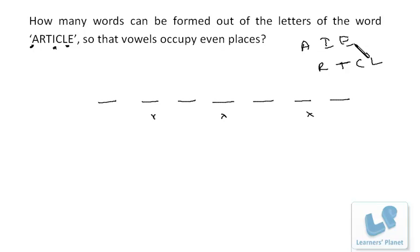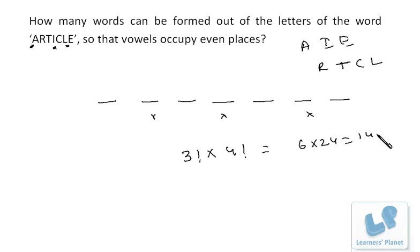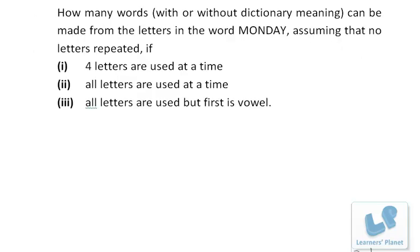The four consonants and three vowels: we arrange the vowels in the 2nd, 4th, and 6th positions — 3 letters in 3 positions, arranged in 3! ways. We then arrange the consonants in the remaining 4 positions — 4 letters in 4 positions, arranged in 4! ways. So the answer is 6 × 24 = 144 ways.